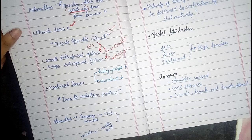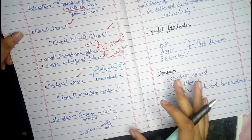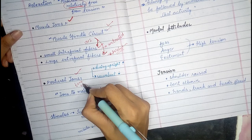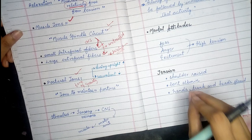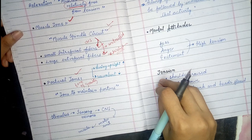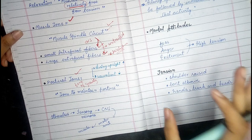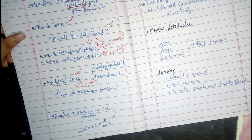Now, postural tone. Our body has a force acting on it 24/7, which is the force of gravity. We maintain a postural tone whether lying, standing, or in any position. Your body continuously works to counterbalance gravity. If you do not counterbalance with your muscles, you cannot maintain any position. This tone in our muscles is called postural tone, which helps us maintain posture against gravity.